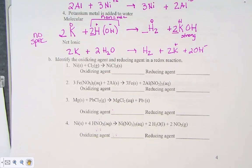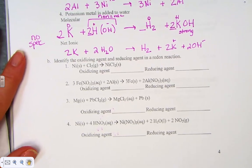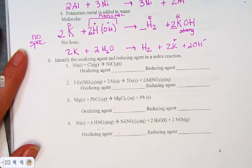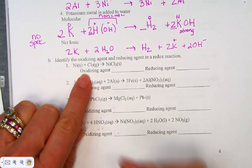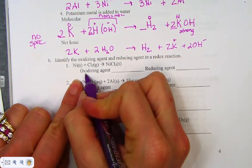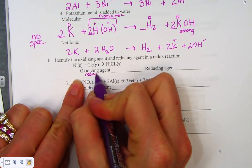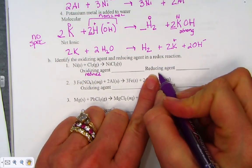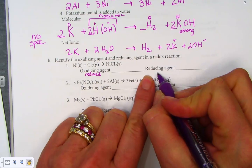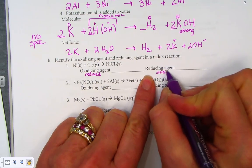Let's talk about oxidizing agents and reducing agents. The oxidizing agent is that reactant that has been reduced, and the reducing agent is the reactant that has been oxidized.